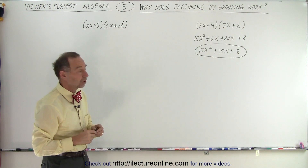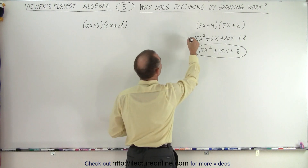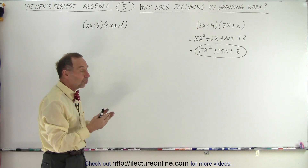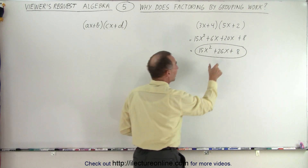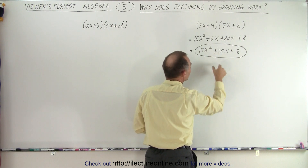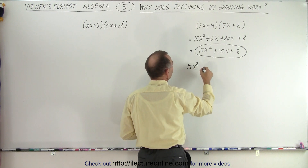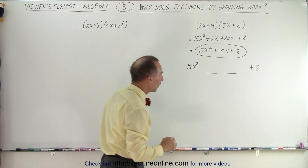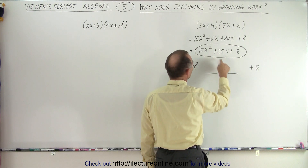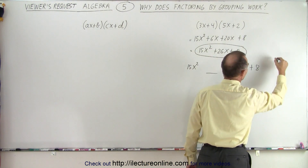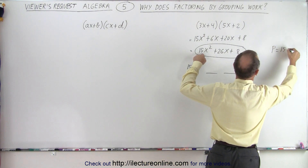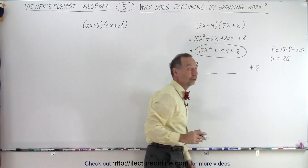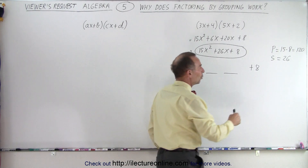When they ask us to factor this, there are a number of ways in which we can do that. One of the ways is what we call factoring by grouping. We're going to take the middle term and rewrite it as the sum of two middle terms. So this can be written as 15x squared plus 8, and now we have to come up with two middle terms. The product of the coefficients of the two middle terms should equal the product of the outer two terms — that is, 15 times 8, which is 120. And the sum must equal 26.